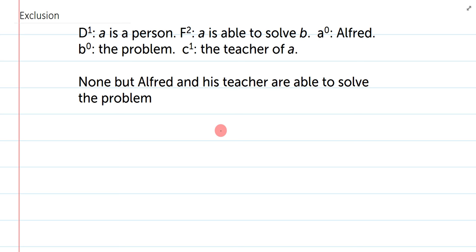In this exclusion question, it says, none but Alfred and his teacher are able to solve the problem. Now, this is sort of an exclusionary clause. I'm actually talking more about the solving of the problem than I am talking about Alfred and his teacher. And I'll get into what that means in a moment.